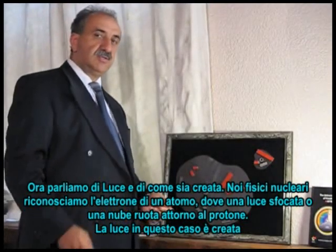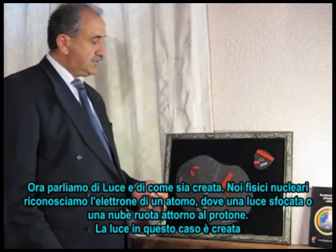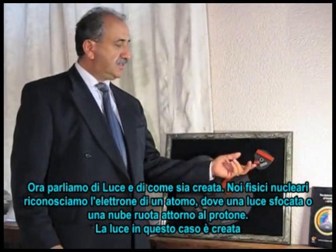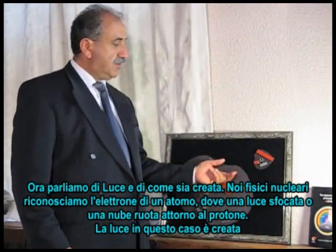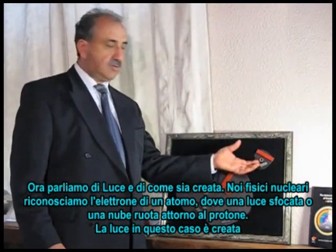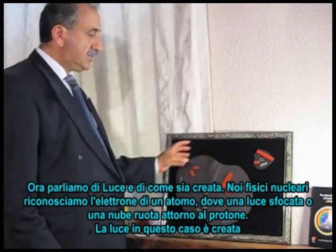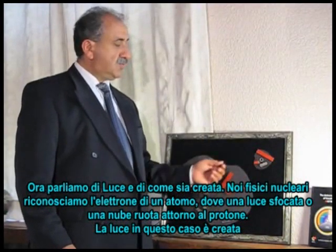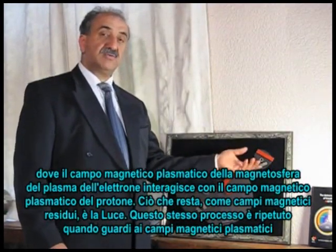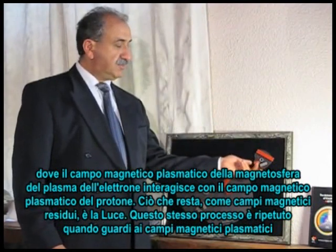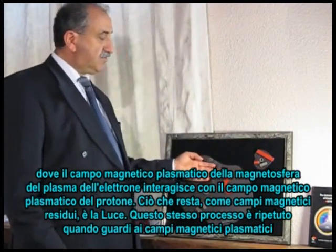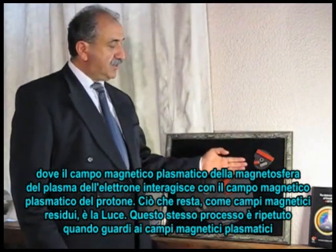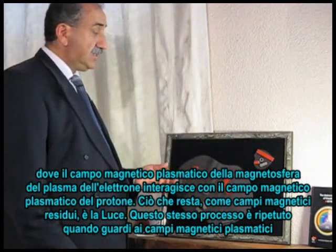In this section we talk about light and how light is created. Usually in nuclear physics we recognize an electron of an atom as a fuzzy cloud rotating around the proton. Light is created through where the plasmatic magnetic field of an electron interacts with the plasmatic magnetic field of the proton, and what is left as a residual magnetic field is light.